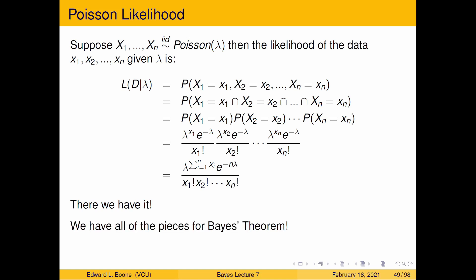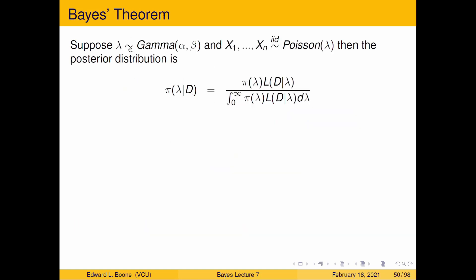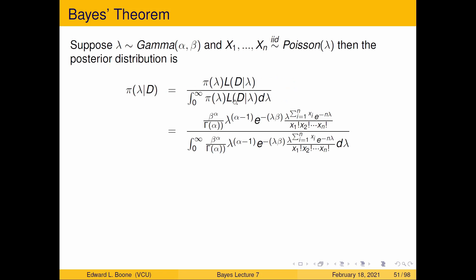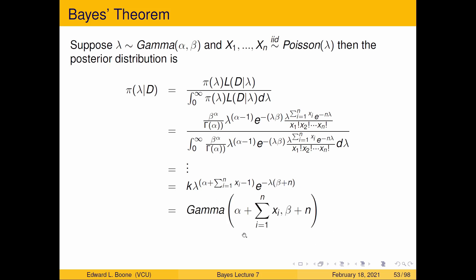Now, suppose lambda follows a Gamma(alpha, beta) prior, and X1 through Xn are iid Poisson(lambda). The posterior distribution pi of lambda given the data is obtained by combining the gamma prior density with the Poisson likelihood. We end up with a constant k times lambda to the power of (alpha plus the sum of the xi minus one), times e to the minus lambda times (beta plus n).